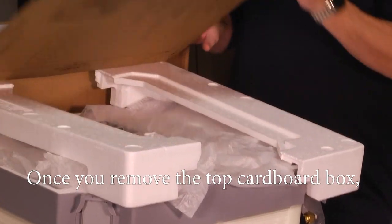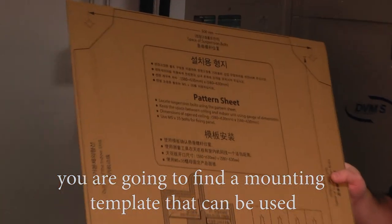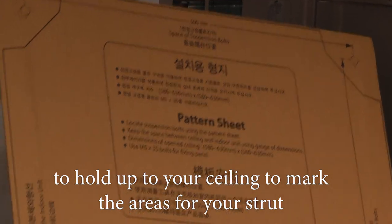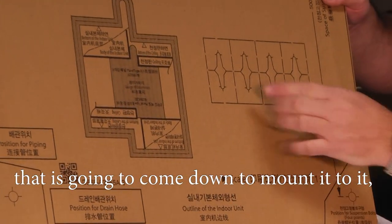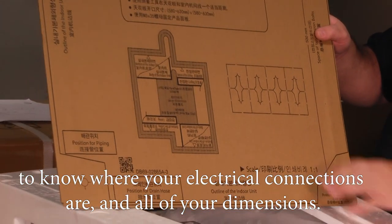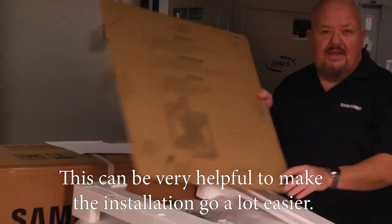Once you remove the top cardboard box, you are going to find a mounting template that can be used to hold up to your ceiling to mark the areas for your strut that's going to come down to mount it, to know where your electrical connections are and all of your dimensions. This can be very helpful to make the installation go a lot easier.